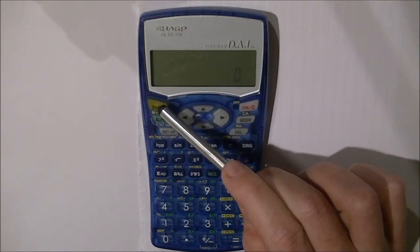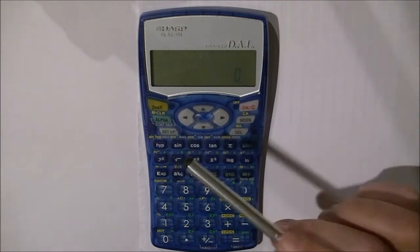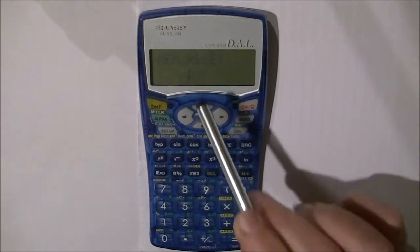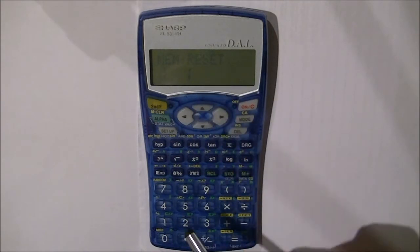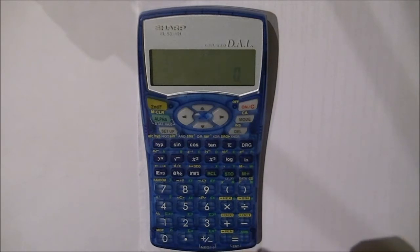So we press the second F and then the alpha key and we get the option here memory 0 or reset is 1. We're going to clear the memory and so we press 0. Clear memory 0 and that's the memory cleared.